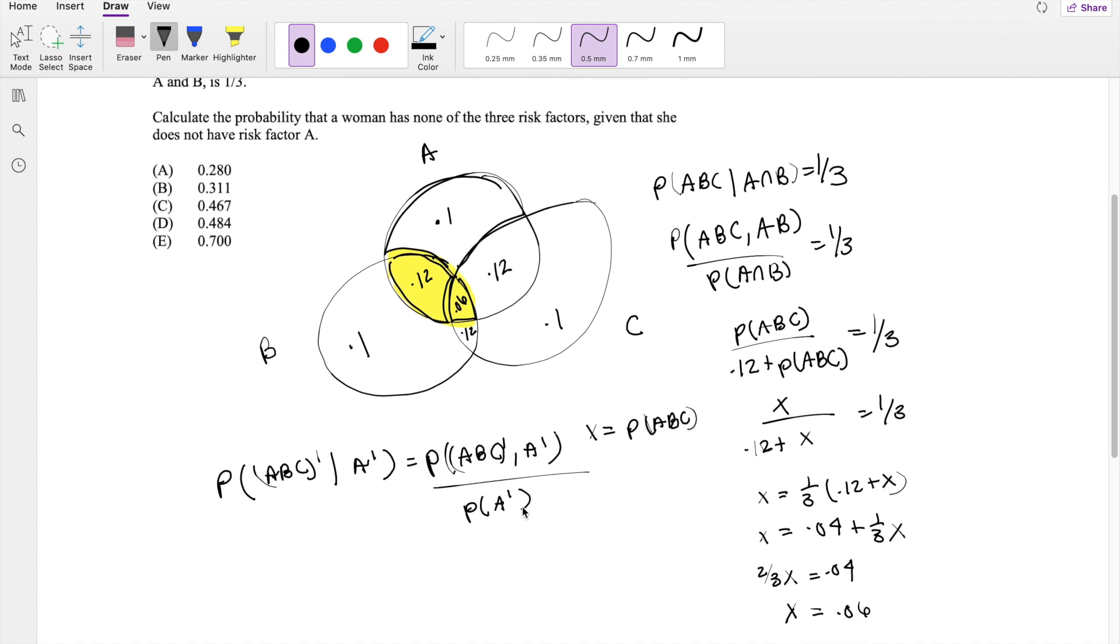So what is the probability that it's not A? Well, the probability of A is equal to 0.1 plus 0.12 plus 0.06 plus 0.12, which equals 0.4. So then not A equals 1 minus 0.4, which equals 0.6.